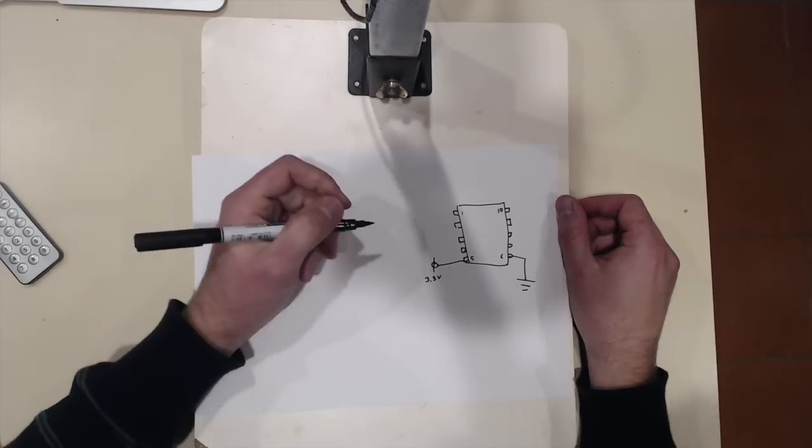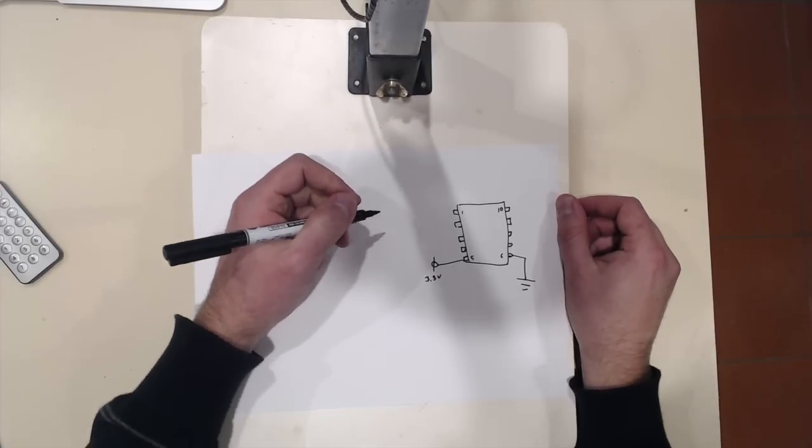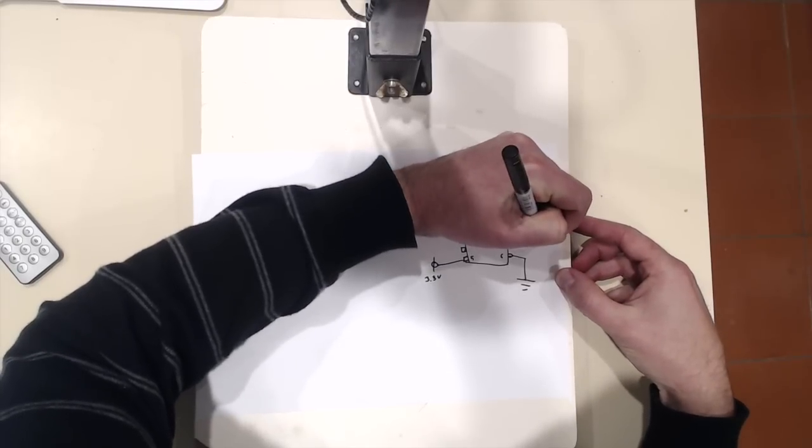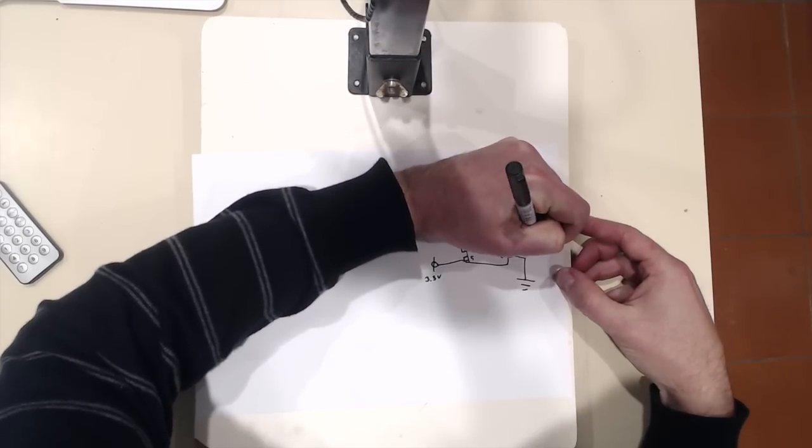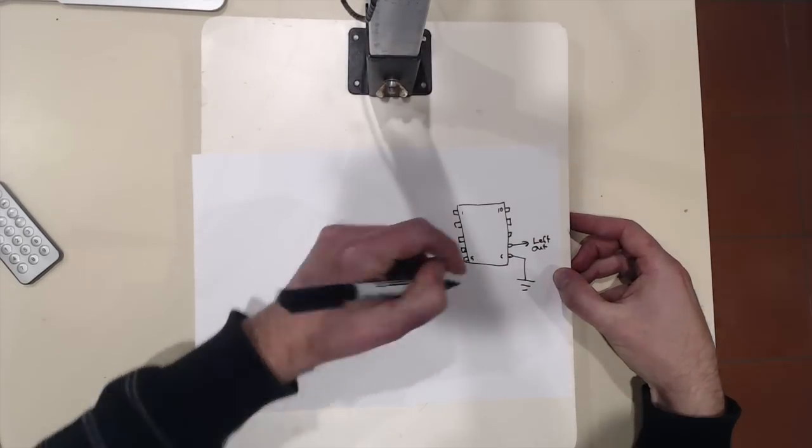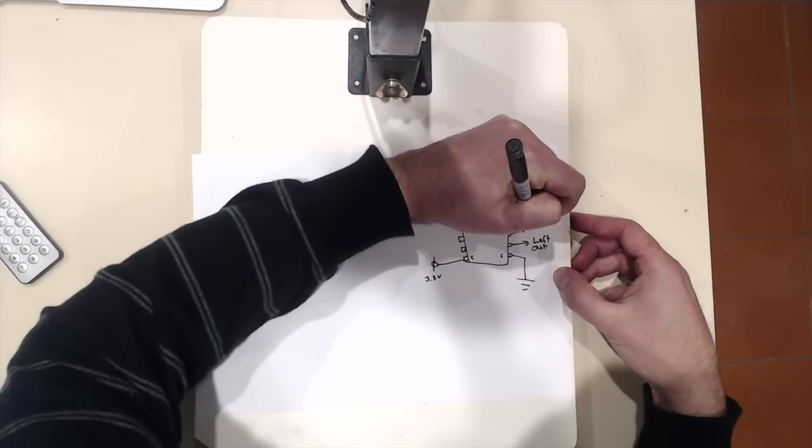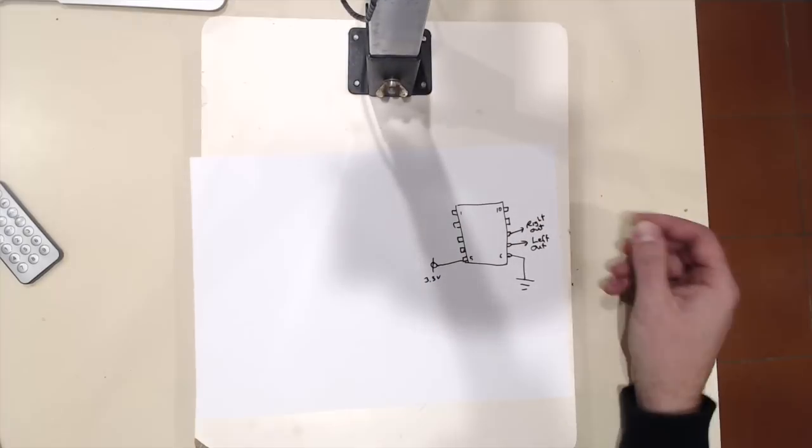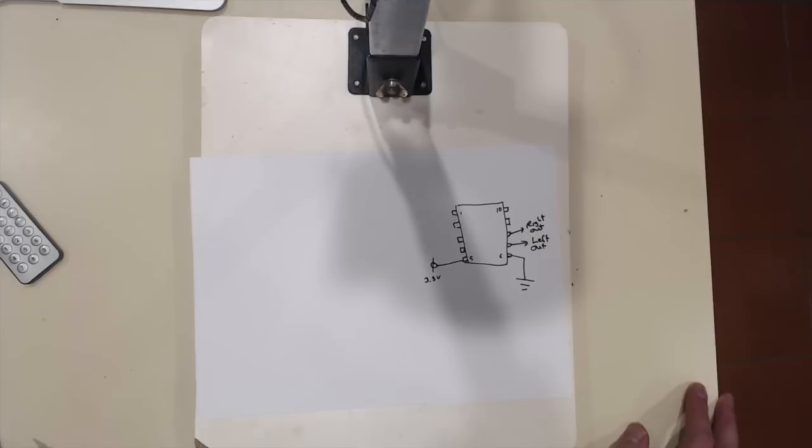Our audio output comes out of pins seven and eight. So, we have our left out. And, we have our right out. And, I'm feeding those into the little amplifier module that I talked about in an earlier video.